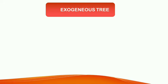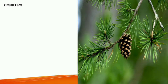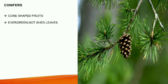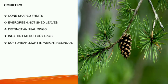Exogenous trees can be classified into two: conifers and deciduous trees. Conifers trees, as the name suggests, have a cone shape and needle-shaped leaves. They are always evergreen trees — they do not shed their leaves. They have distinct annual rings and indistinct medullary rays. They have very soft, weak, lightweight, and resinous timber. Examples are chir, pine, spruce, deodar, fir, kail, and larch.